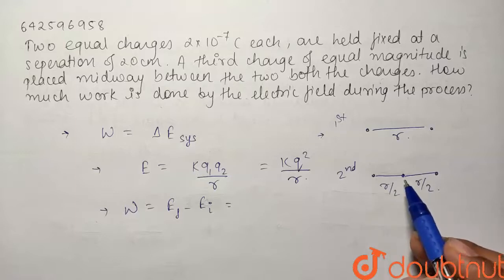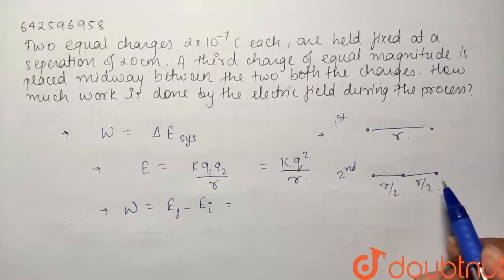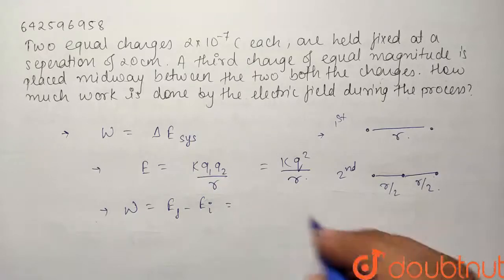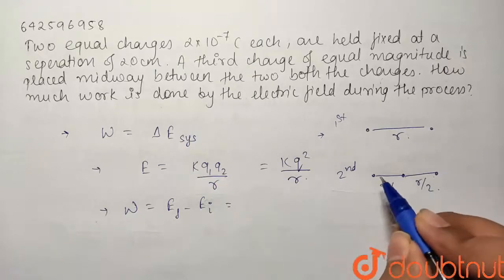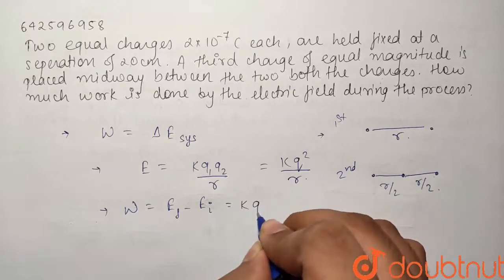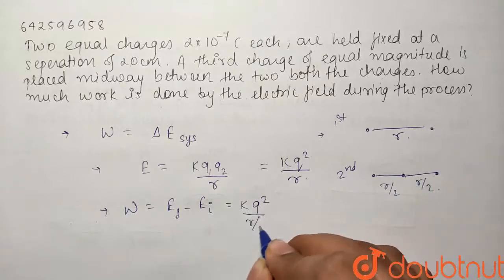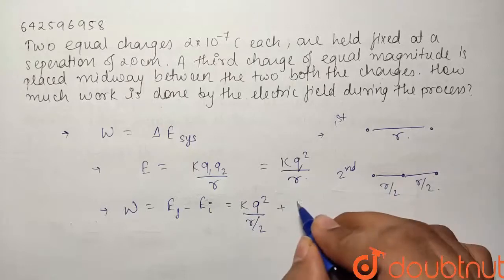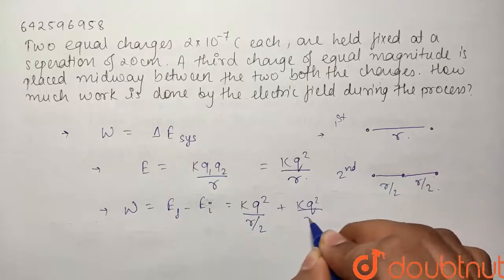There will be three interactions between these two charges, between these two charges, and between these two charges. So if I write the first interaction between the first and the second charge, it will be equal to KQ²/(R/2) plus again KQ²/(R/2).